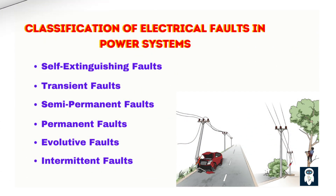Now that we know about fault types in electrical networks, let's discuss the classification of electrical faults in power systems. Faults in electrical power systems represent abnormal conditions that disrupt normal operation. Each fault type exhibits unique characteristics and requires specific responses from protection systems.